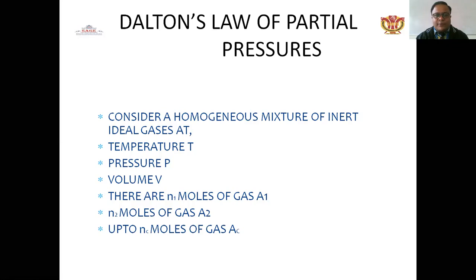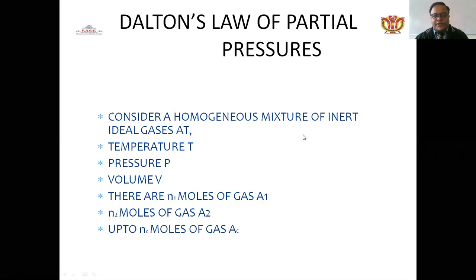When two gases — hydrogen and oxygen — are mixed, after mixing they form a mixture. The total pressure of that mixture equals the summation of the individual partial pressures of each component. We consider a homogeneous mixture at temperature T, pressure P, and volume V.